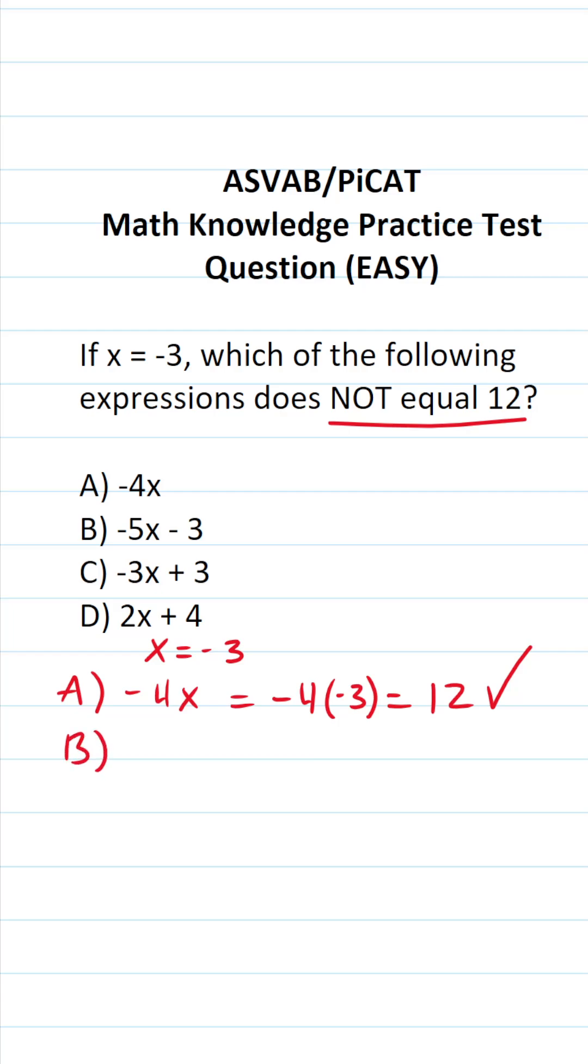Let's check b now. We have negative 5x minus 3. We know x is going to be negative 3. So this becomes negative 5 times negative 3 minus 3. This becomes negative 5 times negative 3. A negative times a negative is going to be a positive. So that's going to be positive 15 minus 3. 15 minus 3 is 12. So b checks out as well.